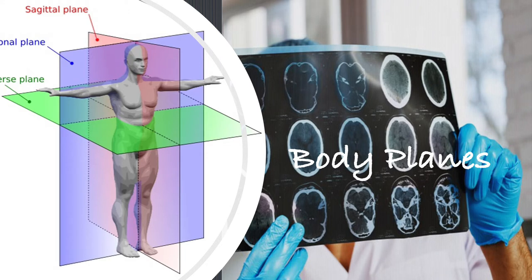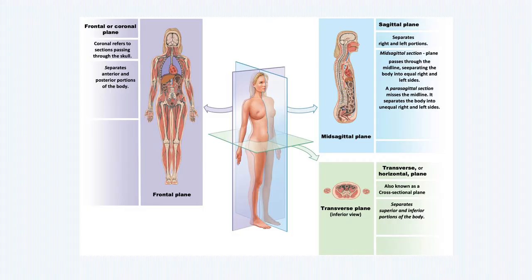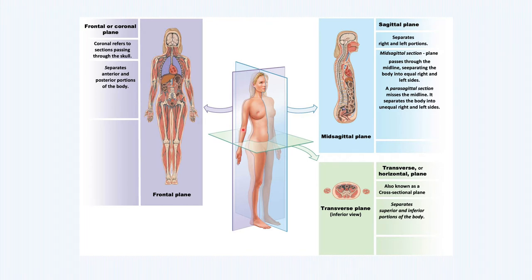We have three major types of planes. The first one is the frontal or the coronal plane. It's basically referred to the sections passing through the skull. This plane will separate the body into anterior portions and posterior portions — basically front and back.